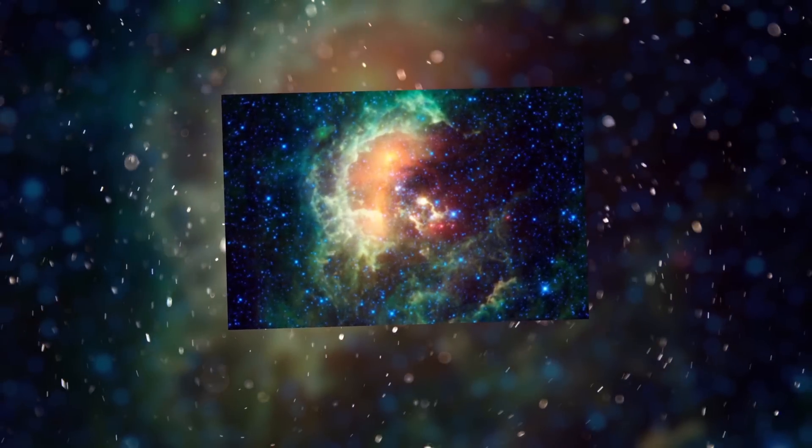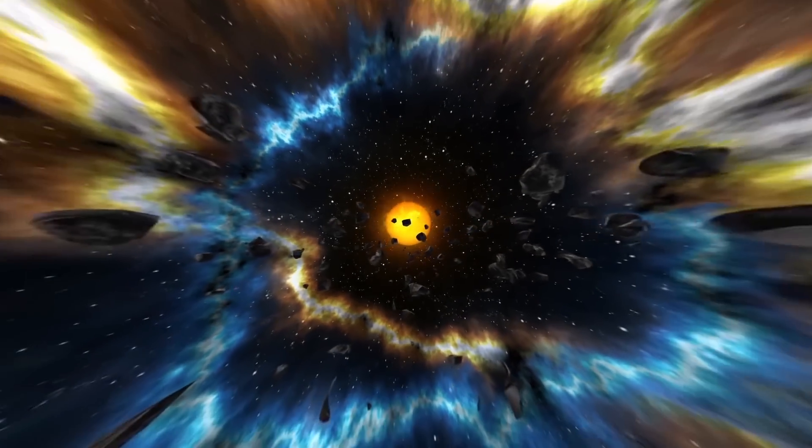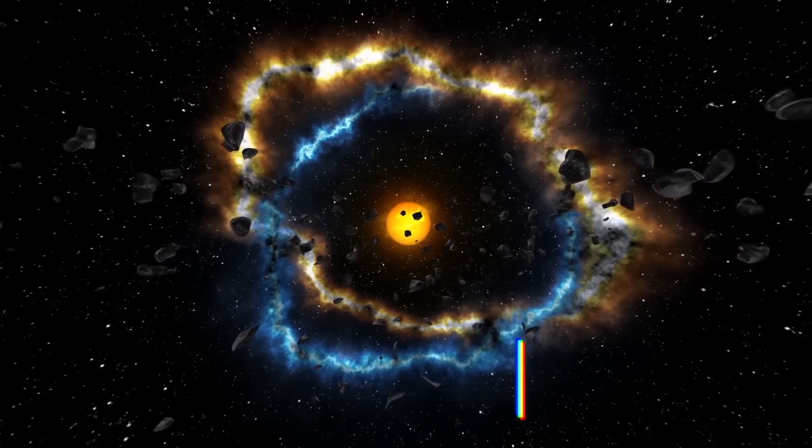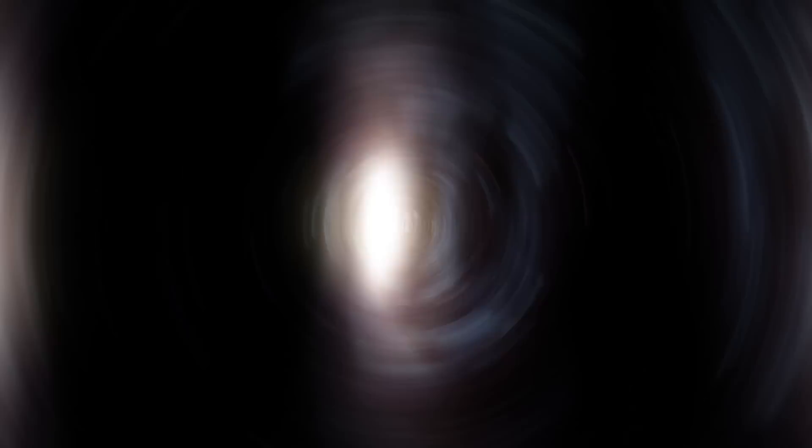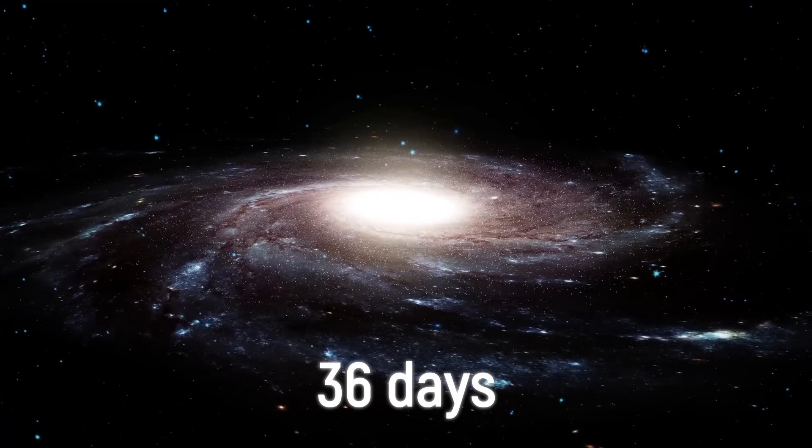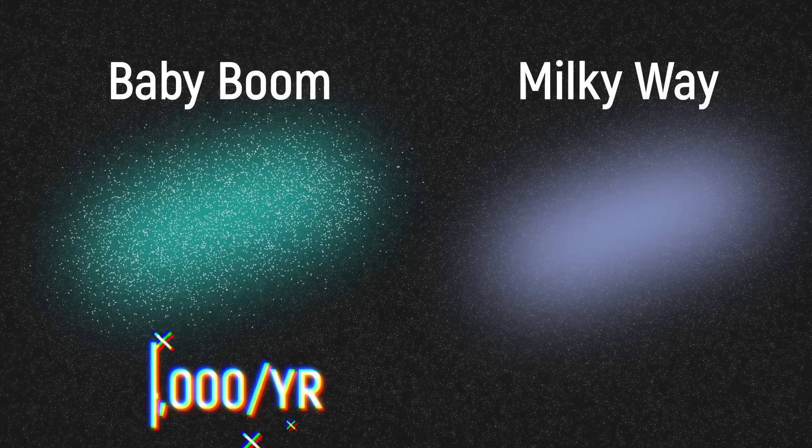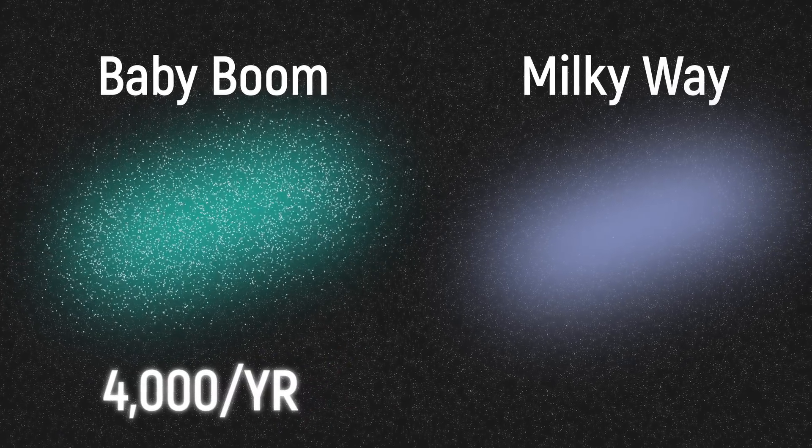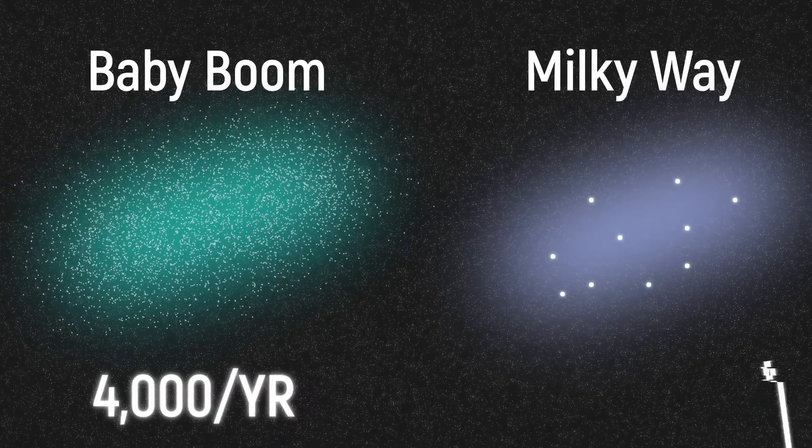Galaxies are thought to slowly produce stars from gas and dust. But this one is operating at a record speed, for which it has received the nickname Baby Boom. She manages to give birth to a new star in just two hours, while, for example, the Milky Way takes 36 days to do this. In other words, Baby Boom produces 4,000 stars a year, and our galaxy only produces 10.